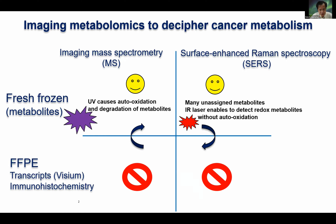Imaging mass spectrometry and surface-enhanced Raman imaging have a great difference. In case of imaging mass spectrometry, we need very strong ultraviolet irradiation that causes auto-oxidation or degradation of metabolites. On the other hand, the SERS imaging developed in my laboratory utilizes an infrared laser, which enables detection of redox metabolites without auto-oxidation. That is the advantage. But the number of metabolites detected is totally different—imaging mass spectrometry can detect a huge number of metabolites, while with SERS there are many unassigned metabolites which need to be assigned after experiments.